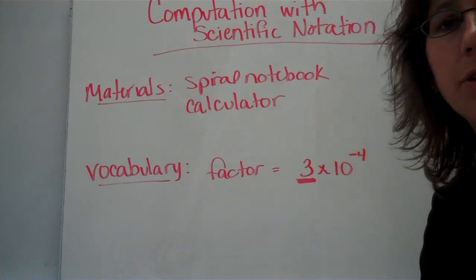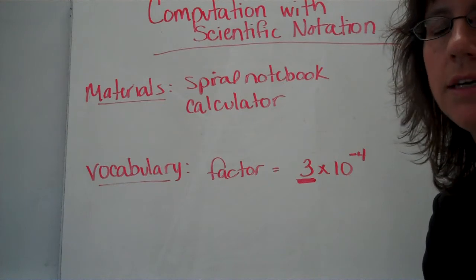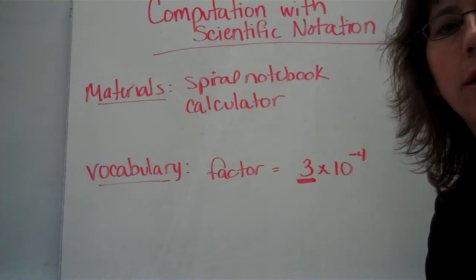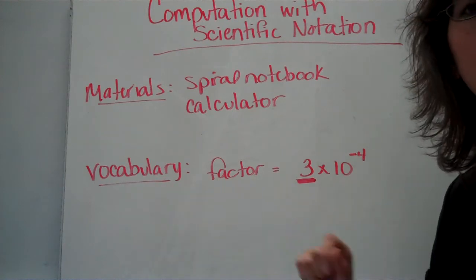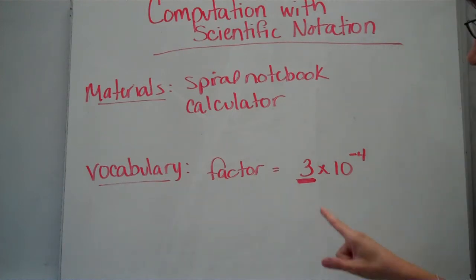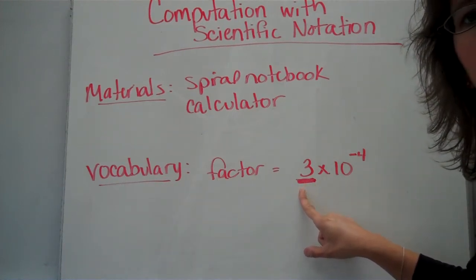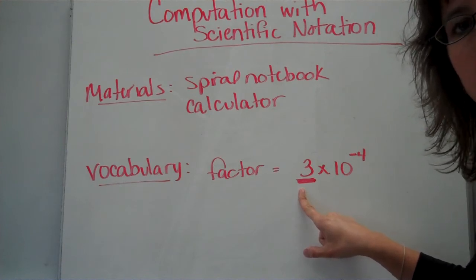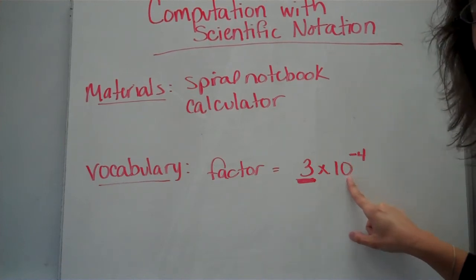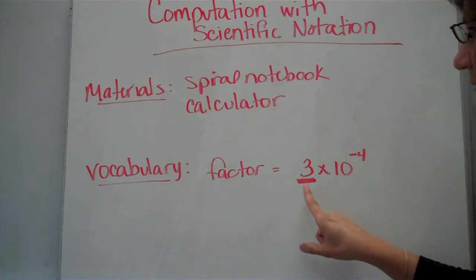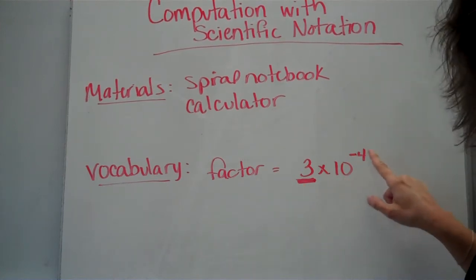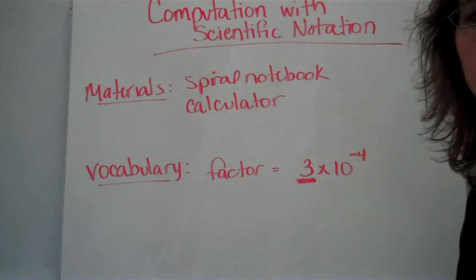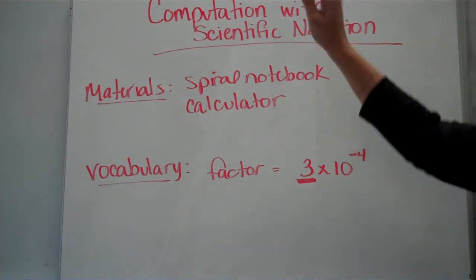You are going to need your spiral notebook and calculator, if you have one handy. You certainly can work it out longhand, but calculator can be handy there. And also, know what the word factor means. Remember, for scientific notation, you have a number in the front, anywhere between 1 and 10, and then you've got times 10 with an exponent. The number in front is called your factor. This 10 with an exponent is called the power of 10. Let's go ahead and get started.